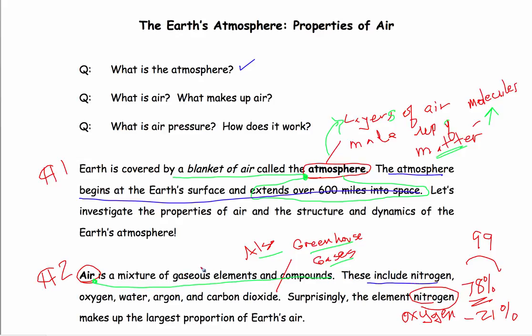Air is a mixture of gaseous elements and compounds. So these gases include nitrogen, oxygen, water, argon, carbon dioxide, and then this is pretty important information right here as well.